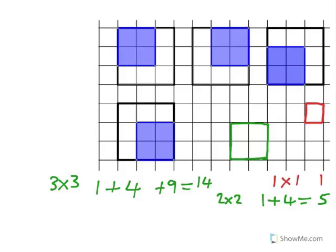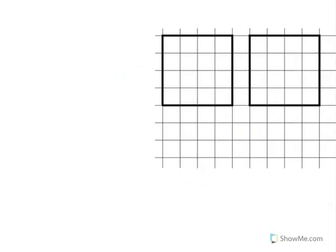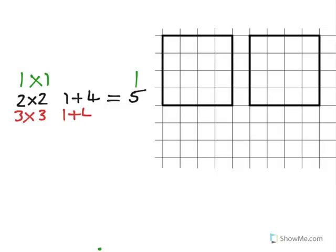So what we're going to try and do now is summarize this. So for the 1 by 1, there's only 1. For the 2 by 2, there's 1 plus 4, which is 5. For the 3 by 3, there's 1 plus 4 plus 9, which is 14.